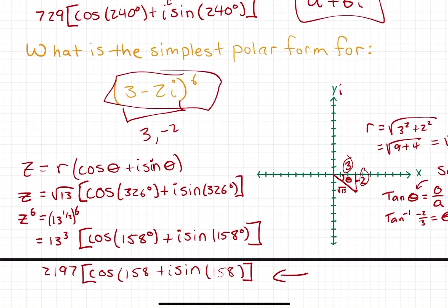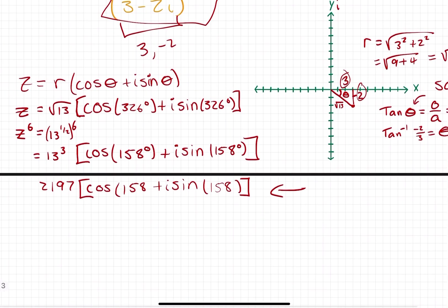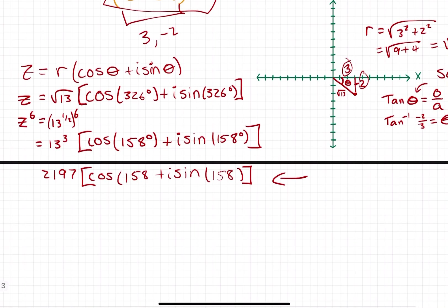You might have a situation where it asks you to give the simplest form in rectangular form. At this point, it's really not that difficult. That's probably the easier part of this problem. All you're going to do is calculate cosine 158 and sine 158 and then distribute your 2,197.